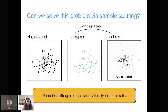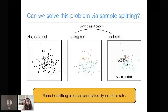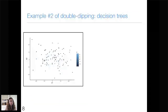Sample splitting has an inflated type one error rate. If I said I only wanted to reject the null hypothesis for p-values less than 0.05, I would accidentally reject the null hypothesis almost always, even on examples where there's no signal in the data. This double dipping issue is not limited to clustering.